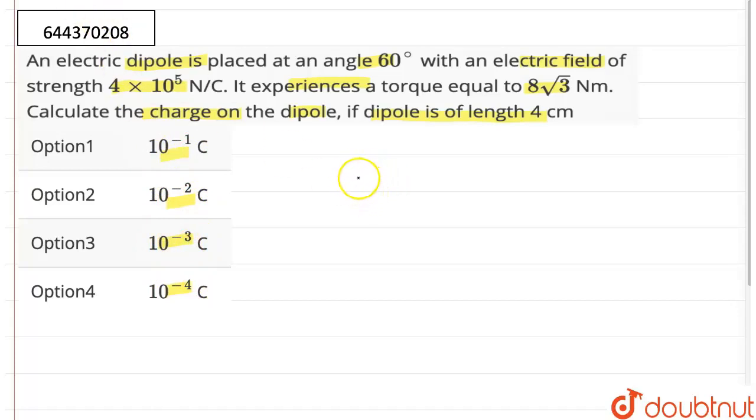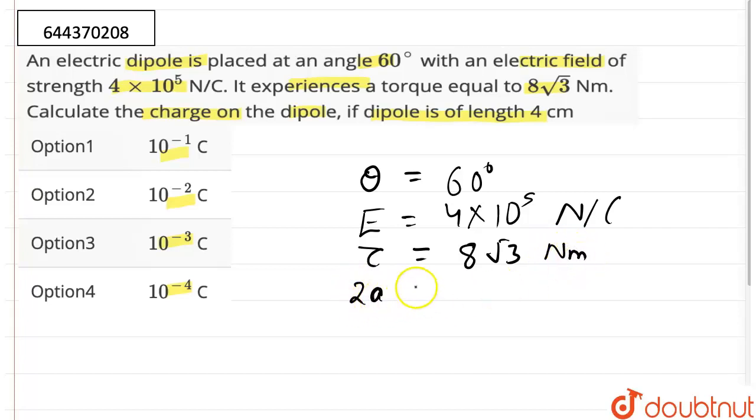So, we have a dipole and the angle between the dipole and the electric field is given, θ = 60 degrees. The electric field is given to us which is 4×10^5 Newton per coulomb and we are also given the torque which is 8√3 Newton meter. And the dipole length 2A is also given 4 centimeter which is equal to 4×10^-2 meters.